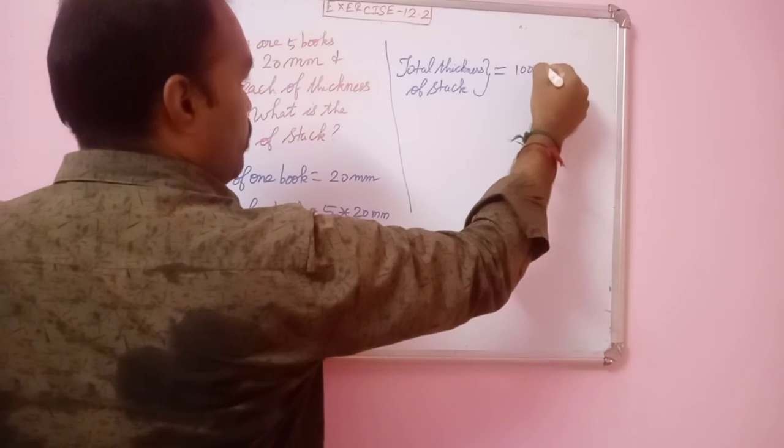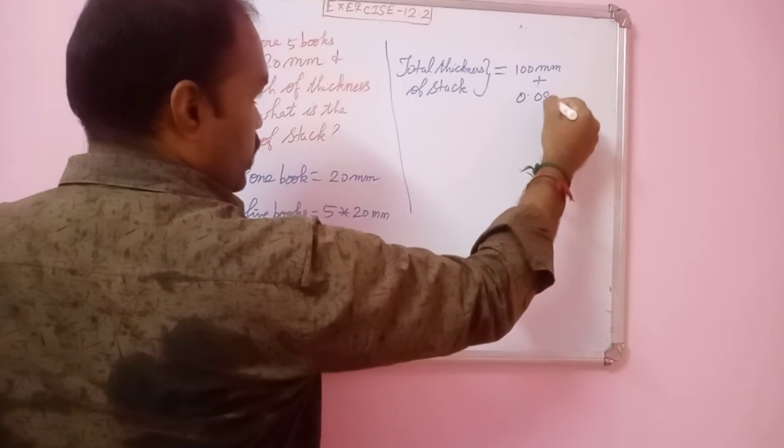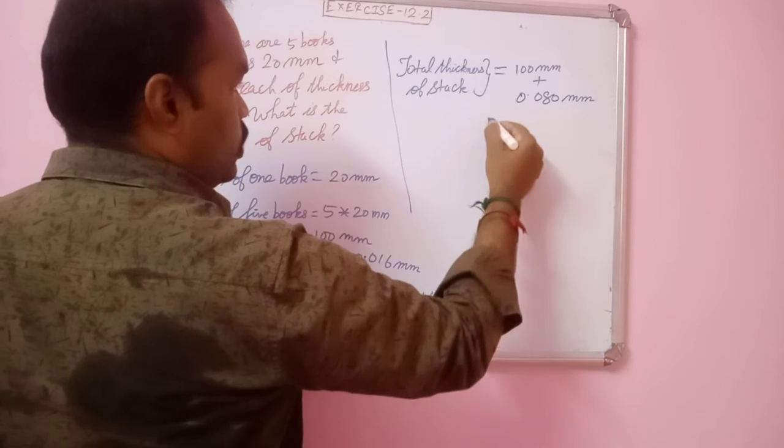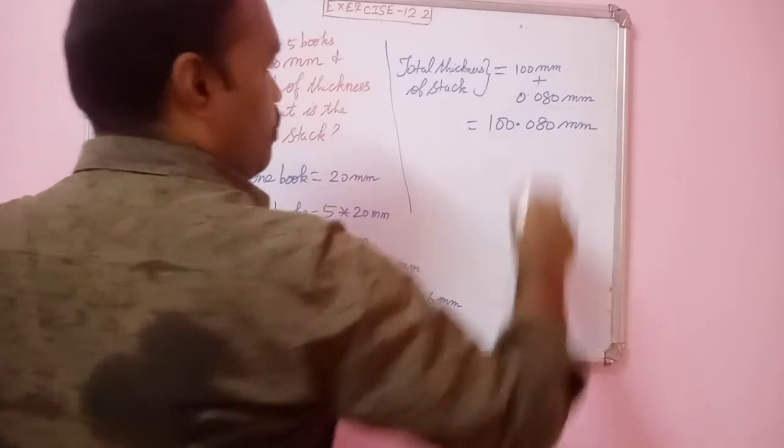100 mm plus 0.080 mm. So, 100 plus 0.080 equals 100.080 mm.